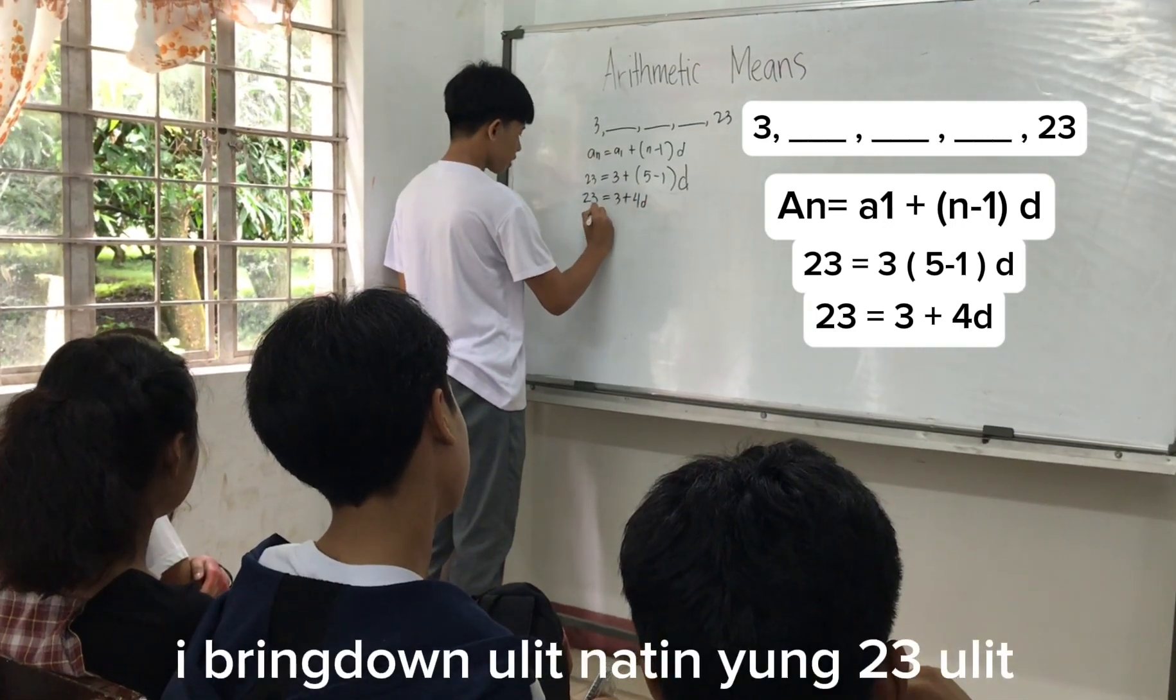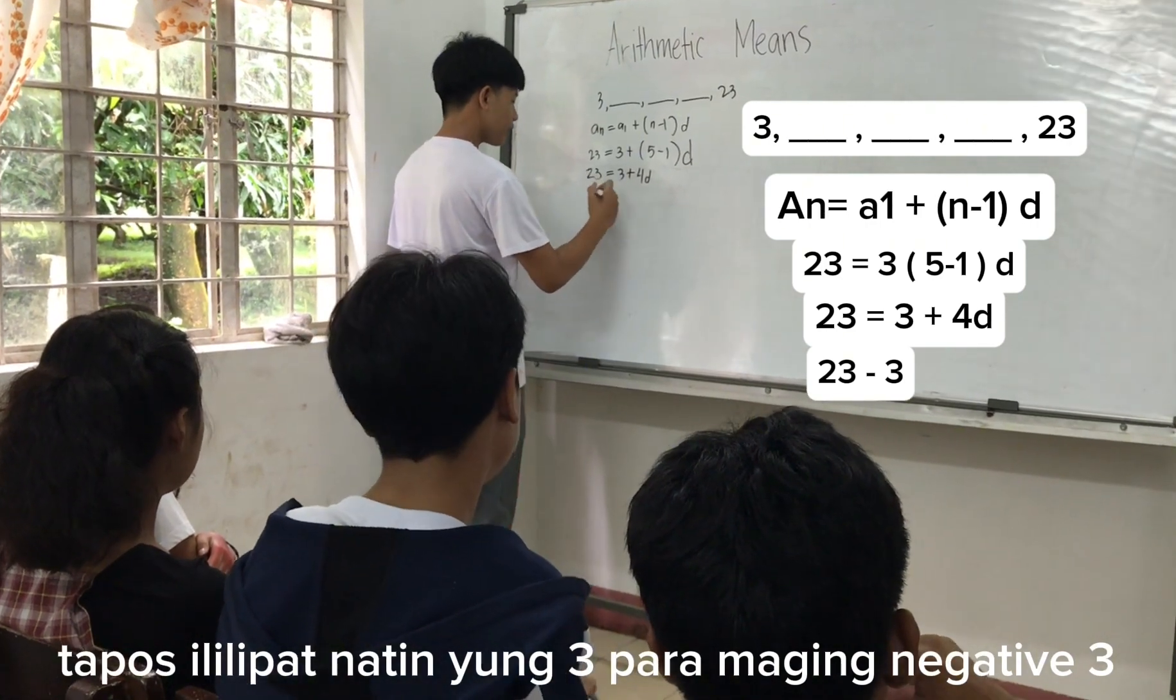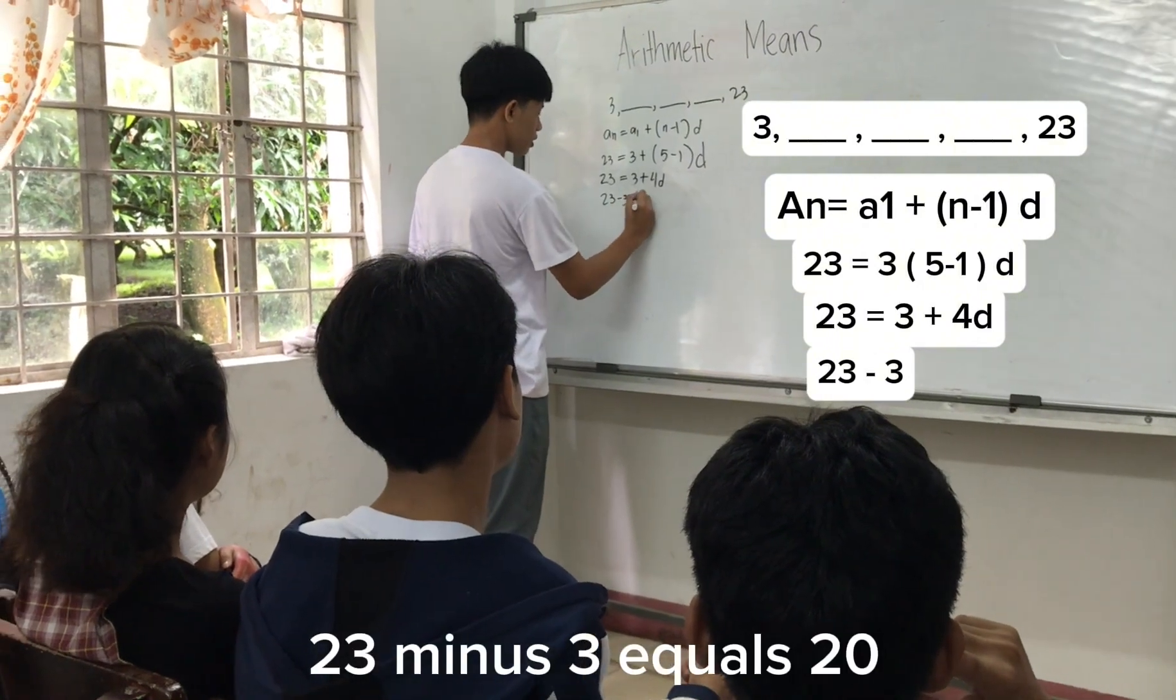I-difeng doon naman natin yung 23 ulit. I-lipat natin yung 3 para makaking negative 1, then yung mapinus natin. So, 23 minus 3, plus 20.